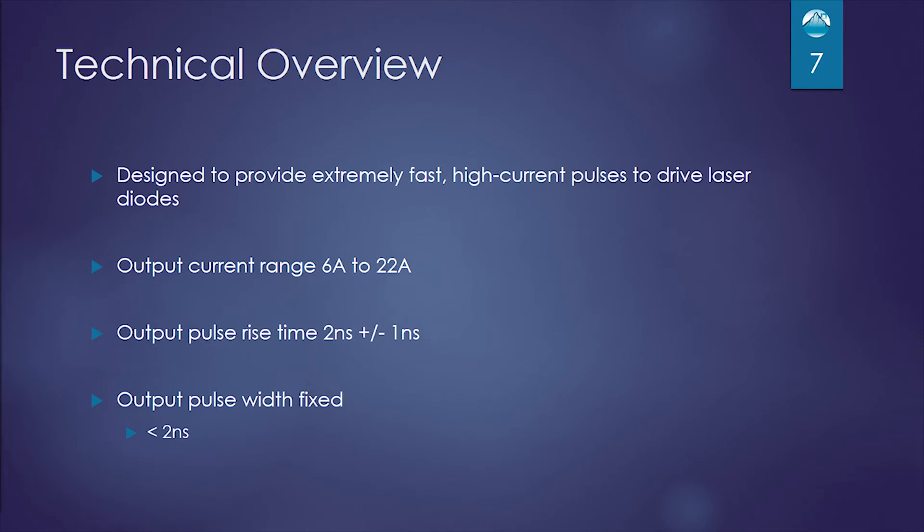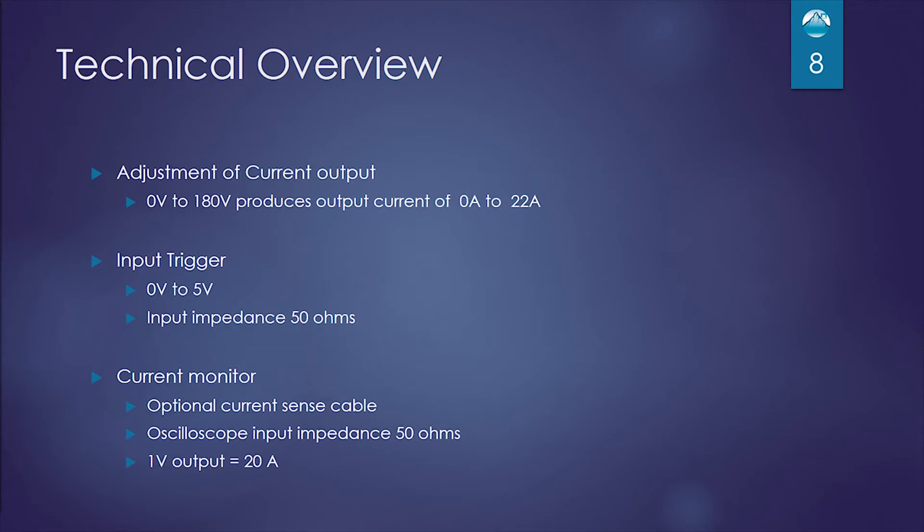This module is designed to provide an extremely fast, high current pulse to a laser diode. The output current range is 6 amps to 22 amps. The rise time is 2 nanoseconds, plus or minus a nanosecond, and the pulse width is fixed at less than 2 nanoseconds. The output current is set by adjusting a high voltage input signal. 0 to 180 volts produces an output current of 0 to 22 amp. The input trigger is a 0 to 5 volt signal that must be able to drive a 50 ohm load. The current monitor, which requires the use of an optional current sense cable, will drive a 50 ohm impedance on an oscilloscope, and a 1 volt output on the current monitor cable equates to 20 amps output of our module.